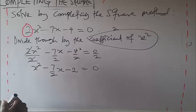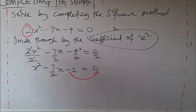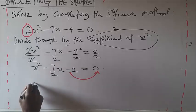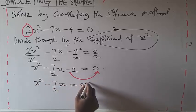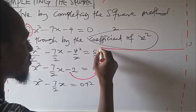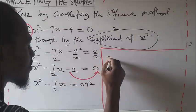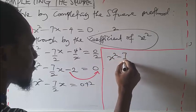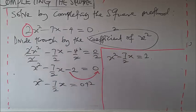Now you need to transfer the constant to the other side. This minus 2 moves to the right, so the expression becomes x² minus 7/2 x equals 2. Let me maximize use of the board.